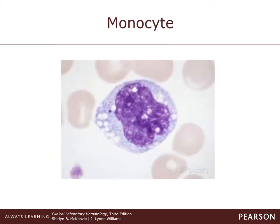Monocytes comprise about 2 to 10 percent of the total white blood cell count. They are the largest of the white blood cells, and their tasks are to identify, engulf, and consume any foreign particles and assist the lymphocytes in mounting an immune response through the assembly and presentation of immunogenic epitopes. On a blood-stained film, they are larger in diameter than any other white blood cells. Their cytoplasm has a bluish-gray color with very fine granules. The nucleus is large and can be convoluted — usually folded or indented — and the cytoplasm may also contain very large vacuoles.